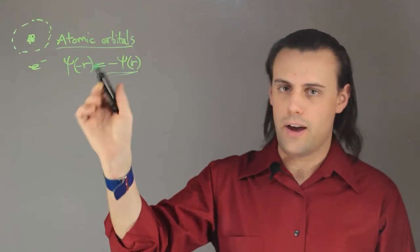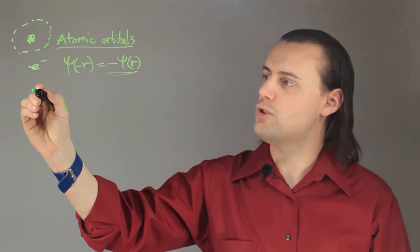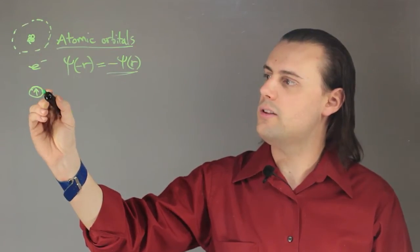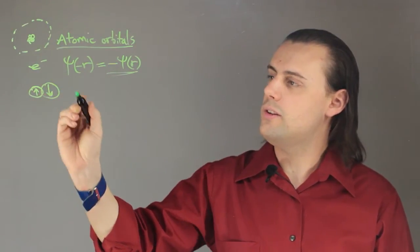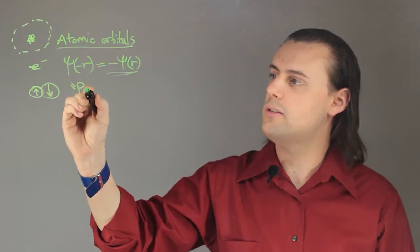Because of this fact, no more than two electrons can occupy the same orbital. So this is known as Pauli's exclusion principle.